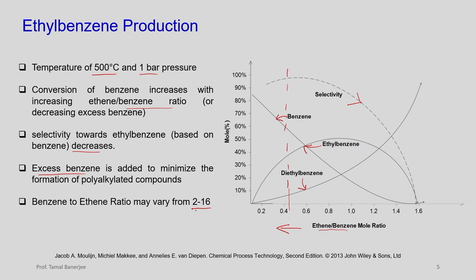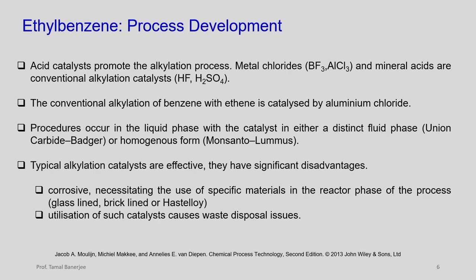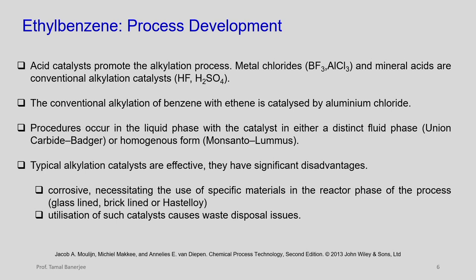For process development, acid catalysts with acidic sites promote the alkylation process. For example, metal chlorides like trifluoroborane or aluminum chloride and mineral acids such as HF and sulfuric acid are conventional alkylation catalysts. The alkylation of benzene with ethene in this process is usually carried out by aluminum chloride. There are two processes: the reaction may occur in liquid phase — either in a distinct fluid phase (Union Carbide Badger process) or homogeneous form (Monsanto-Loomis process).